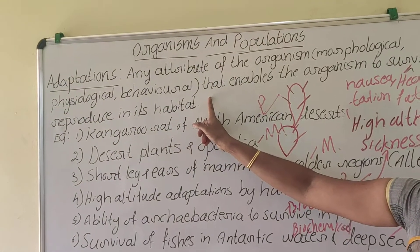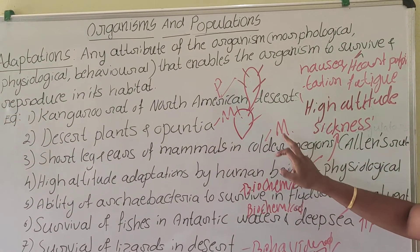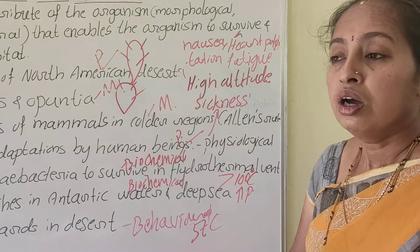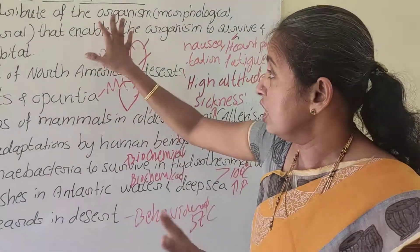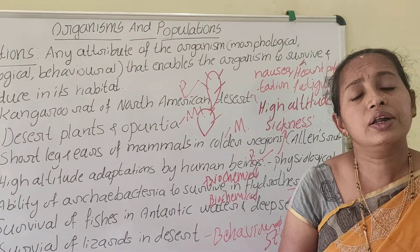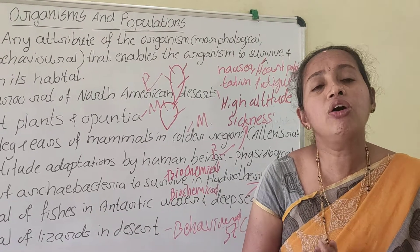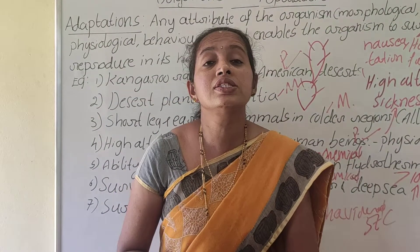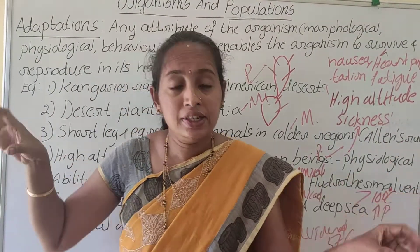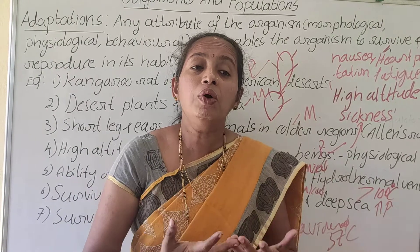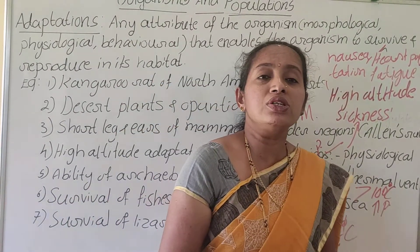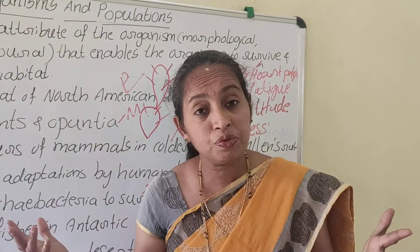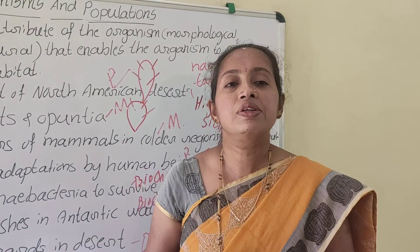These examples may be asked for 5 marks or 1 mark in the exam, specifying morphological or physiological adaptations. This is still at the level of organism ecology — how organisms respond to abiotic factors and adapt. In the next class, we will study how a population responds in ecology — the characteristic features of a population. Thank you.